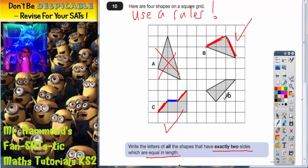On shape D you should find that there are no two sides which are equal. This blue one and this blue one are slightly different.